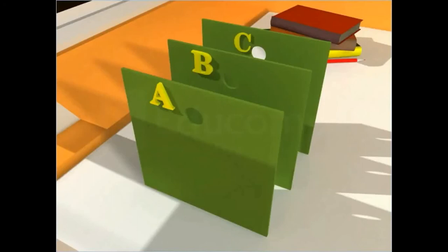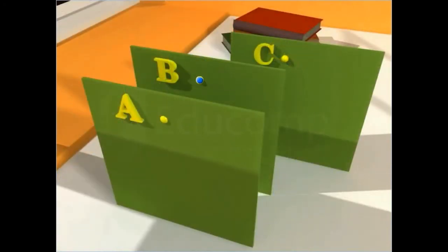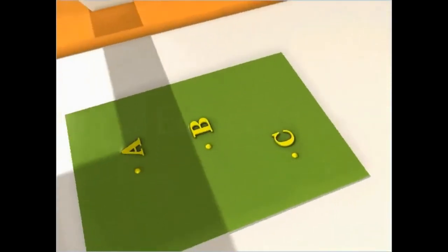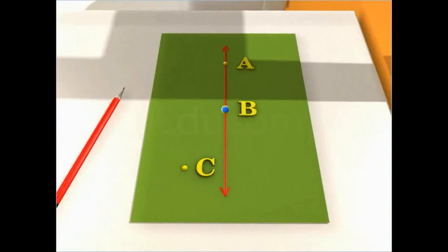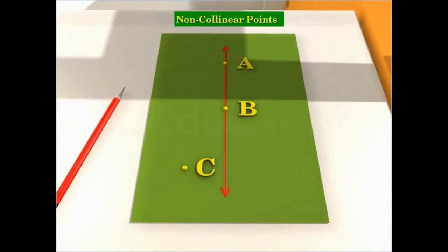On the contrary, in the case where the position of one of the cardboard pieces is changed, if the holes A, B, and C are replaced by points A, B, and C, and then you draw a straight line joining the points A and B, you will observe that the point C does not lie on the line joining A and B. Such three or more points which do not lie on the same line are called non-collinear points.